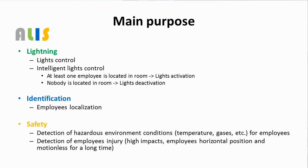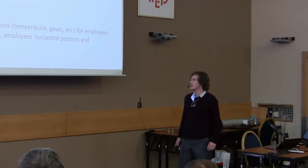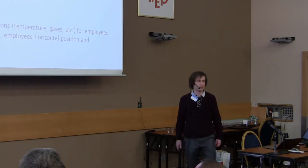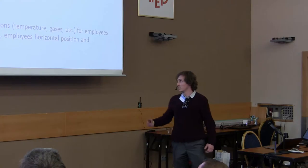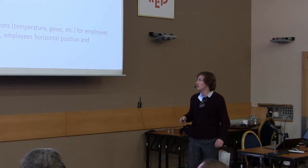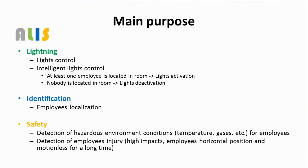The second part of the ELIS system is employees' localization. And the last part deals with detection of hazardous environment conditions, such as temperature, gases, etc., for employees. And detection of employees' injury, such as high impacts, employees' horizontal position, and motion loss for a long time.